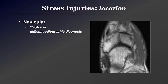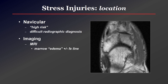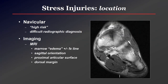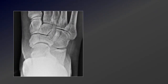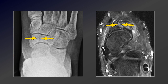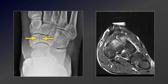The navicular is one of the high-risk stress fractures — a very difficult radiographic diagnosis. On MR we may see primarily edema with or without a fracture line. These fractures tend to occur in the center of the navicular in a sagittal orientation, usually beginning along the dorsum of the bone at its proximal articular surface and propagating sagittally. On a radiograph there's a lot of overlap in the midfoot, but there is a central navicular sagittally oriented lucency. If you see just bone marrow edema, CT can help identify a fracture line.